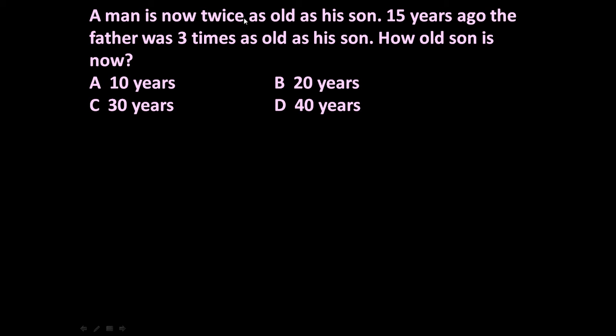A man is now twice as old as his son. So first let us assume present age of son and father is S and F. S means age of son, F means age of father in years.